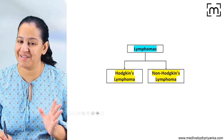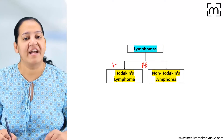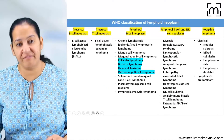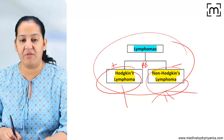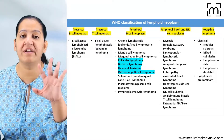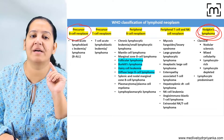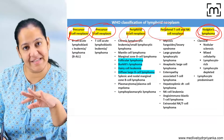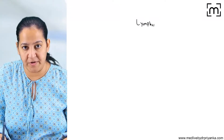There are two types of lymphomas: Hodgkin's Lymphoma and Non-Hodgkin's Lymphoma. This classification is based on the Reed-Sternberg (RS) cell — if RS cell is present, it's Hodgkin's Lymphoma; if absent, it's Non-Hodgkin's Lymphoma. According to the WHO classification, lymphomas are divided into five categories: one is Hodgkin's Lymphoma, and the remaining four are Non-Hodgkin's — Precursor B Cell, Precursor T Cell, Peripheral B Cell, and Peripheral T Cell neoplasms.